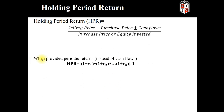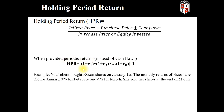Let's take a look at one other example. We're going to look at holding period return whenever returns are given to us in interest form. This is the formula that will be provided on all tests as well as the CFP exam to compute the holding period return when we are given interest rates. Your client purchased Exxon shares on January 1st. The monthly returns of Exxon are 2% in January, 3% in February, and 4% in March. She then sells those shares at the end of March. So what is her three-month holding period return? Please pause the video and attempt to arrive at a solution.